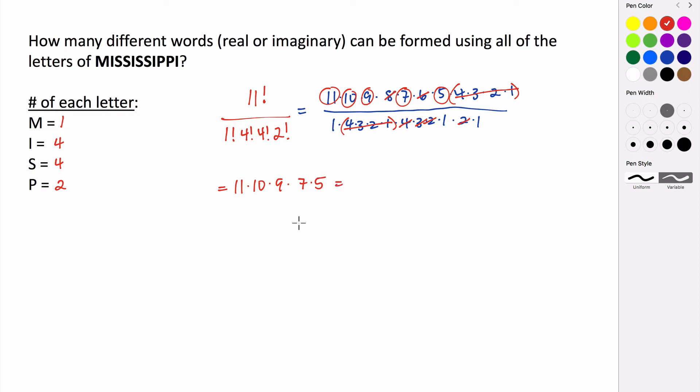If you plug all of those into your calculator, you end up with 34,650. So there are 34,650 different ways that we can rearrange the letters in the word Mississippi.